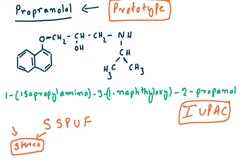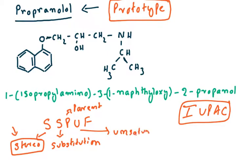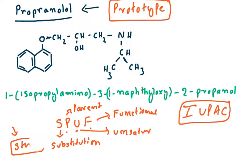YSSPUF stands for: Y — stereochemistry, S — substitution, P — parent chain, U — unsaturation, F — functional group. This is the sequence to follow when writing an IUPAC name. Stereochemistry is often eliminated as it is cumbersome, and if there is no unsaturation that is eliminated too, leaving substitution, parent chain, and functional group.